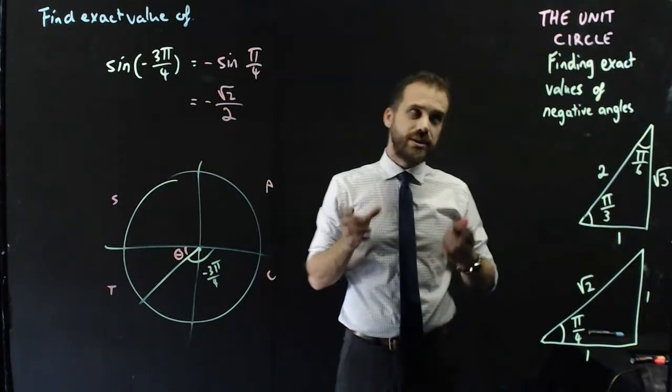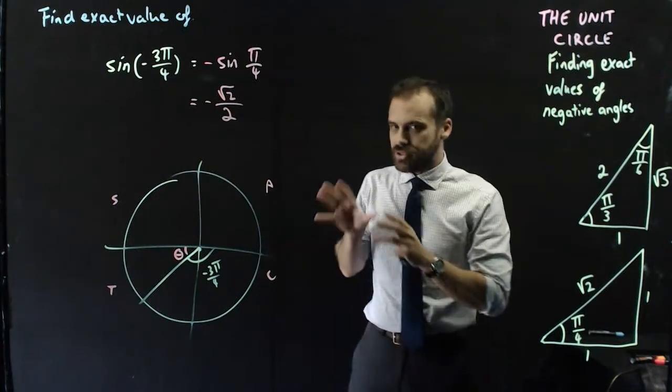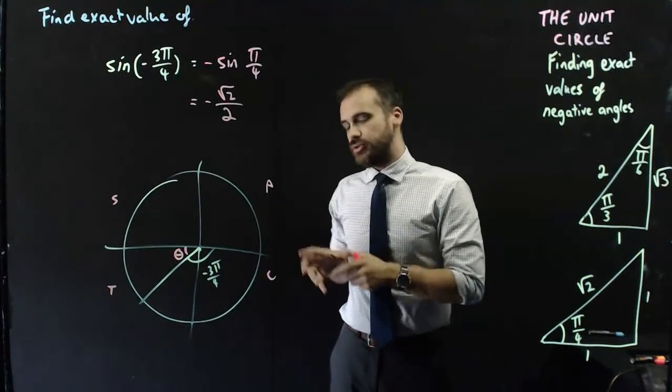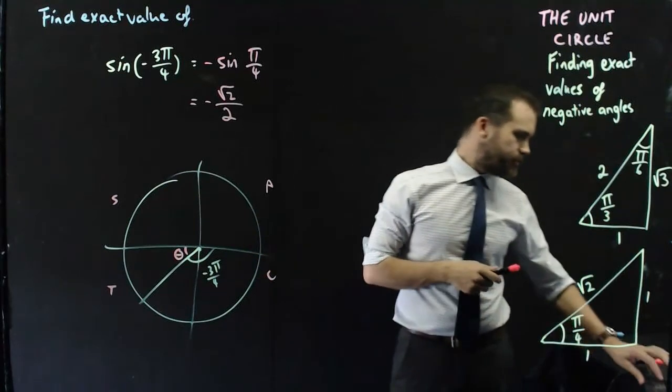All right, they are two examples of negative angles. As long as you know how to draw it on your unit circle, you're in business.